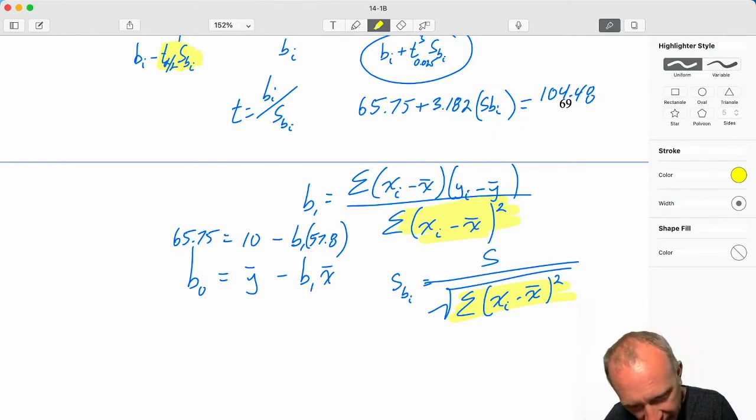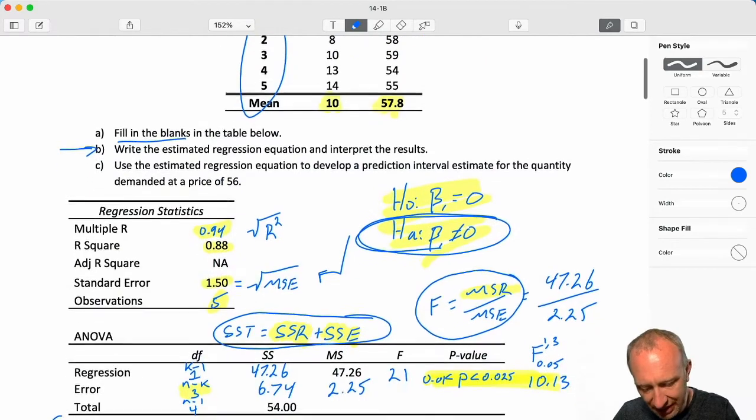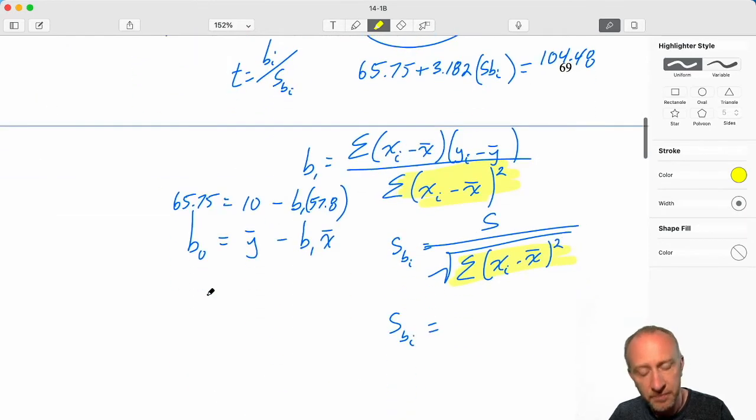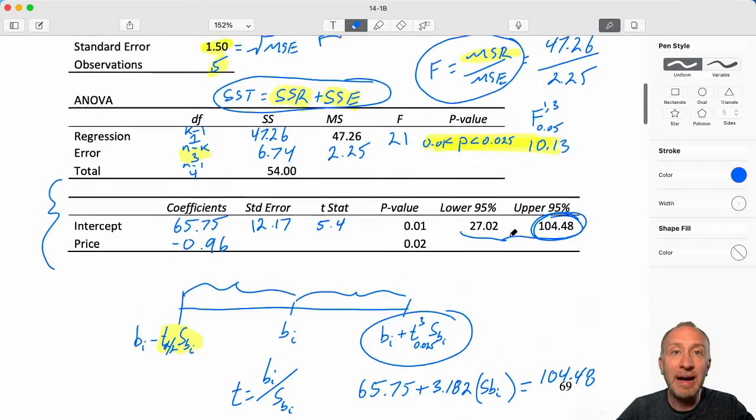So here I'm going to have that standard error of the coefficient. S, well, we know what S is. That was given to us up here. That's that 1.5, the square root of MSE. So there's the 1.5. And now I need the square root of that nonsense. So let's come back up to our data. And so here we'll have to calculate those differences squared, and then we'll add them up.